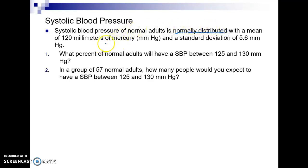We're told that the mean is 120 and the standard deviation is 5.6. When we look at our question we're asked what percent of normal adults will have a systolic blood pressure between 125 and 130.